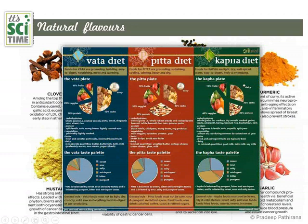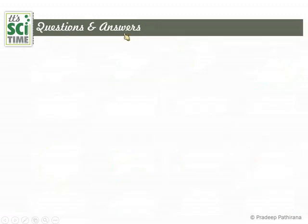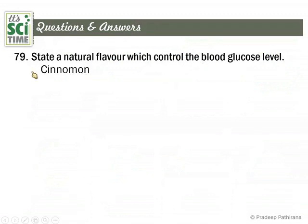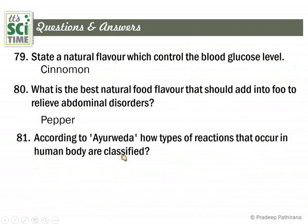This is given in Ayurveda. In Ayurvedic medicine, diets are divided into three groups: Vata diet — related to air; Pitta diet — related to bile, secreted by the liver; and Kapha diet — related to phlegm. The diet type is selected according to the body type. This comes from the eastern Ayurvedic science or medical science. Question: State the natural flavor which controls blood glucose level — that is cinnamon. The best natural flavor to relieve abdominal disorders is black pepper.